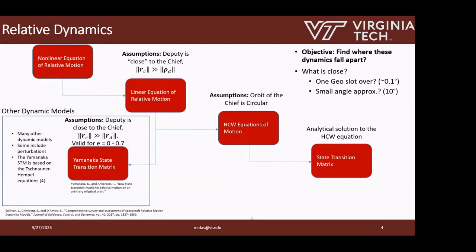Our goals are to find how HCW specifically benefits from this EQC frame, and develop a way to allow the HCW equations to be used with elliptical chiefs. HCW equations' underlying assumption is that the chief has no eccentricity in its orbit — these dynamics don't account for any eccentricity of the chief orbit. We have three base sets of dynamics: nonlinear equations of relative motion, linear equations of relative motion, and HCW equations, from which we can analytically solve and pull a full state transition matrix. These are where you start when working in relative motion and trajectory optimization.